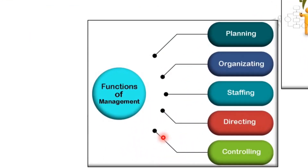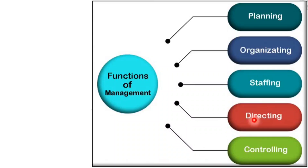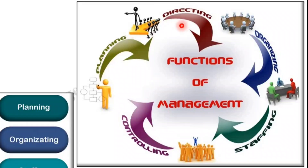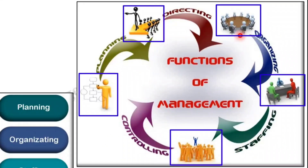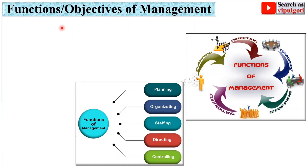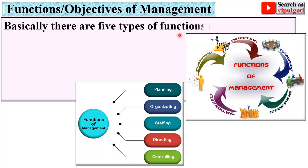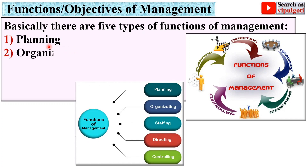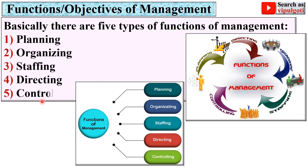In this figure you can see basically there are five different objectives of management: planning, organizing, staffing, directing, and controlling. All these five different objectives are shown in symbolic notation and are actually the functions of management. So let's see one by one briefly.